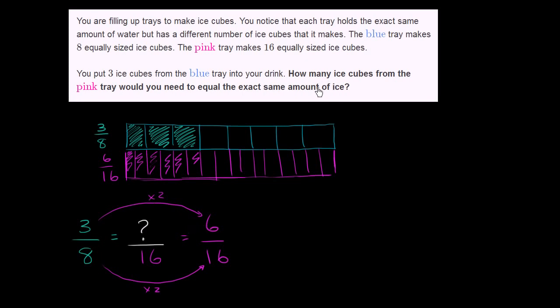So to answer the question, how many ice cubes from the pink tray would you need to equal the same amount of ice? Well, that is, you would need six cubes.